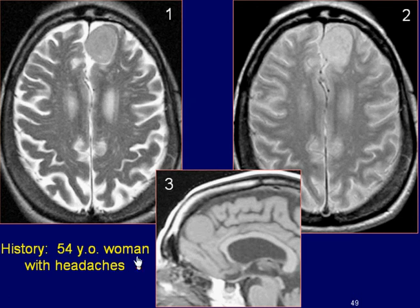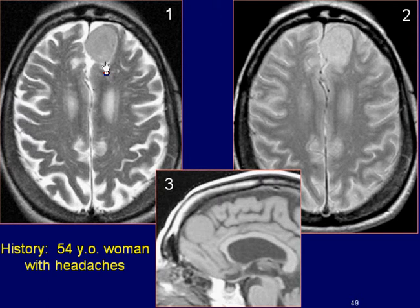A 54-year-old woman with headaches. Axial T2 and proton density weighted images of the brain show a well-defined midline mass lesion in the anterior frontal region with close anatomical relationship to the falx cerebri.